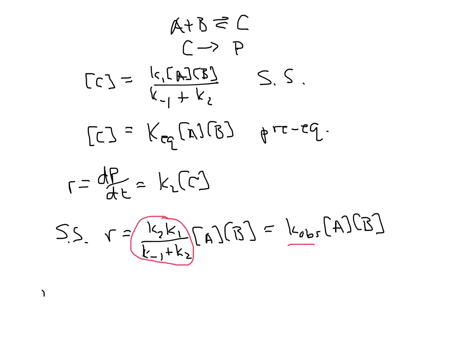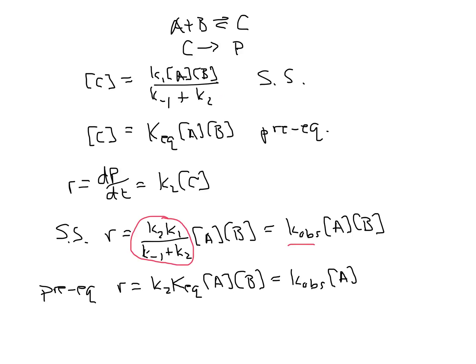In the pre-equilibrium reaction, the rate is equal to K2 times the equilibrium constant times A times B, or again K observed times A times B, and K observed is equal to K2 times K_eq — again, a constant not dependent on any concentrations. So, if I measure this reaction, I will find that the reaction is second order overall, first order in A and first order in B, and it doesn't matter which mechanism it goes through, I get the same rate law.